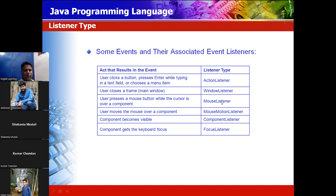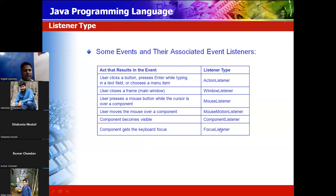When a user clicks a mouse button while the cursor is over the component, it is called a MouseListener. When the component becomes visible — like when a button or text becomes visible — that is called a ComponentListener. When the component gets keyboard focus, that is called a FocusListener.